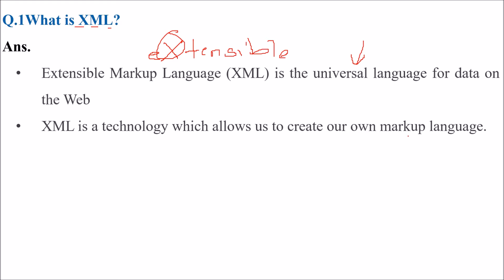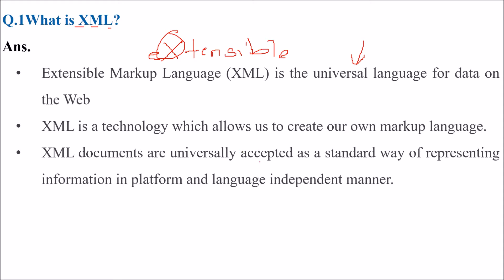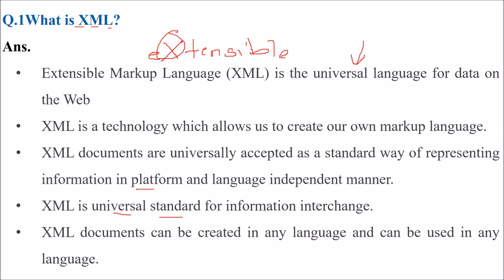XML is a way, a technique or technology, which allows us to create our own markup language. We can create our own tags. XML documents are universally accepted as a standard way of presenting or representing information in a platform and language independent manner. Because of this platform and language independency, XML documents are so popular. XML for information interchanging is now almost a universal standard, and XML documents can be created in any language and used in any language, making XML vital, important, and widespread.